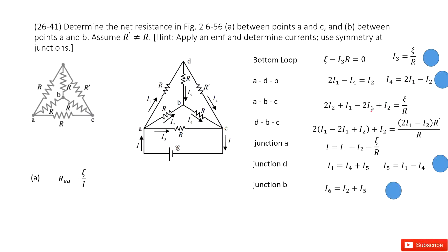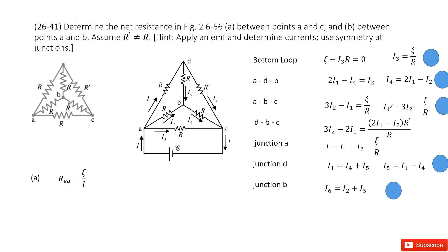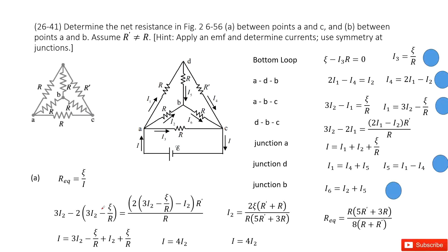Now we have three equations with I1, I2, and I. We use I2 to replace I1, and in the resulting equation the only variable is I2, so we can solve it. After simplifying, we find I equals 4 times I2. Now we can get the equivalent resistance between A and C: it is simply epsilon divided by I. Substituting our expression for I, we get the equivalent resistance R.